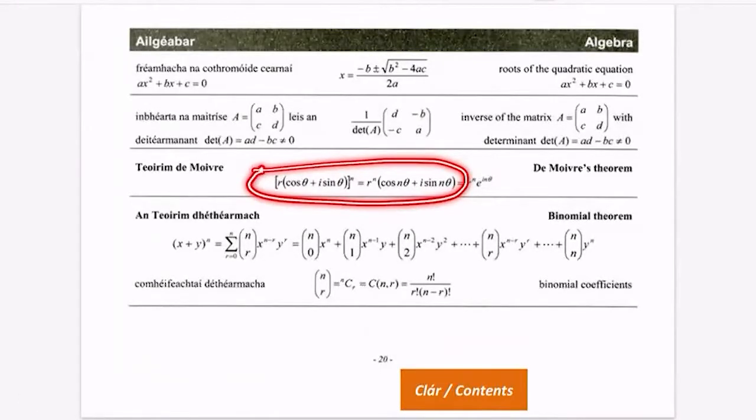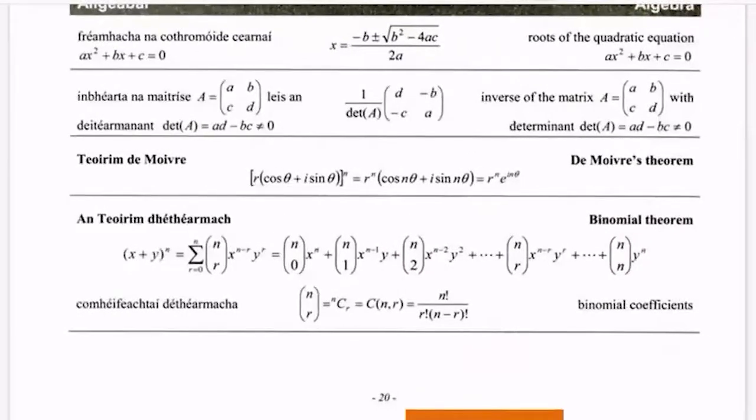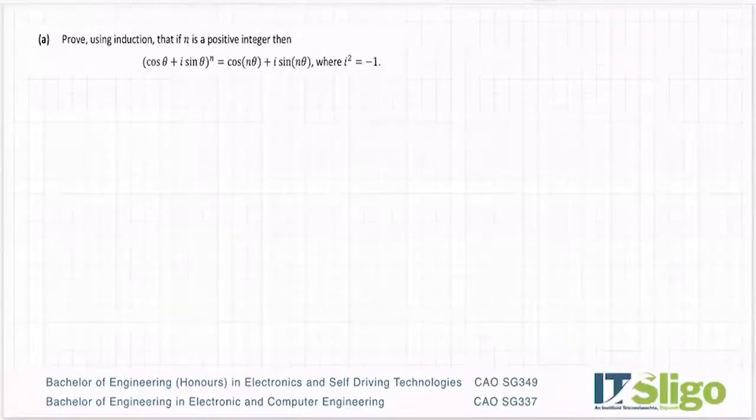This question can also be phrased as prove De Moivre's theorem using proof by induction. If you go to your log tables, they're giving this when your modulus is one. So that's why there's no r in what we're proving, or r is one in this case. It's a proof by induction, so proceed as you normally would.